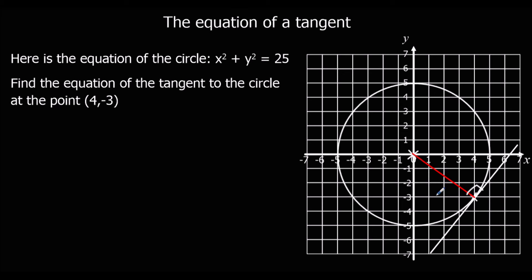So this radius and the tangent are perpendicular lines. We can work out the gradient of our radius, and then use the negative reciprocal to find the gradient of the tangent. We've got two points: (4, -3) that we know, and (0, 0).